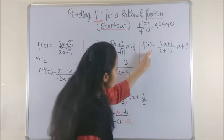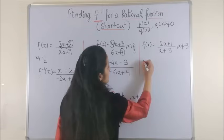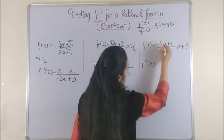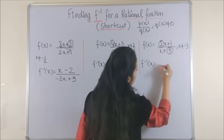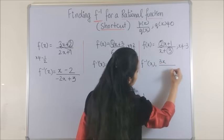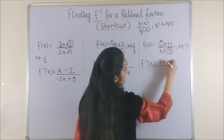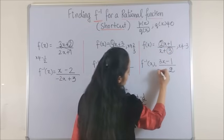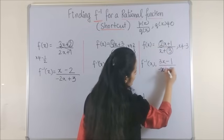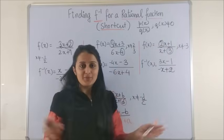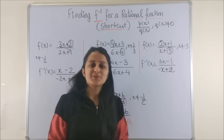Once again, here f inverse of x: exchange the 2 and 3 along with their signs. So this becomes 3x and this is 2. Next, this becomes minus 1 and this becomes minus x, and of course there is a plus 2. Wasn't that so simple?